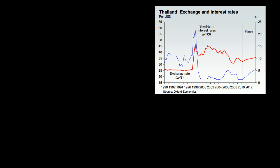What I want to do in this video is show you that some of the things we've been talking about in the last few videos actually do happen. In particular, talk about how one of these speculative attacks on a currency can turn into a banking crisis. This right over here is a chart from Oxford Economics showing Thailand's exchange rate and short-term interest rates from the early 90s until the present.